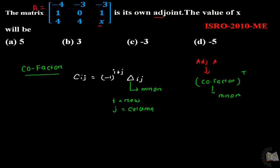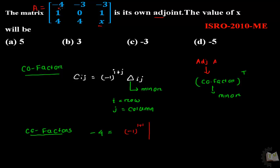Let's find the cofactor of each term — there are 9 terms. The cofactor of the element minus 4, which is in the first row and first column, is minus 1 to the power 1 plus 1, times the determinant of the submatrix: 0, 1, 4, x — which gives minus 4.